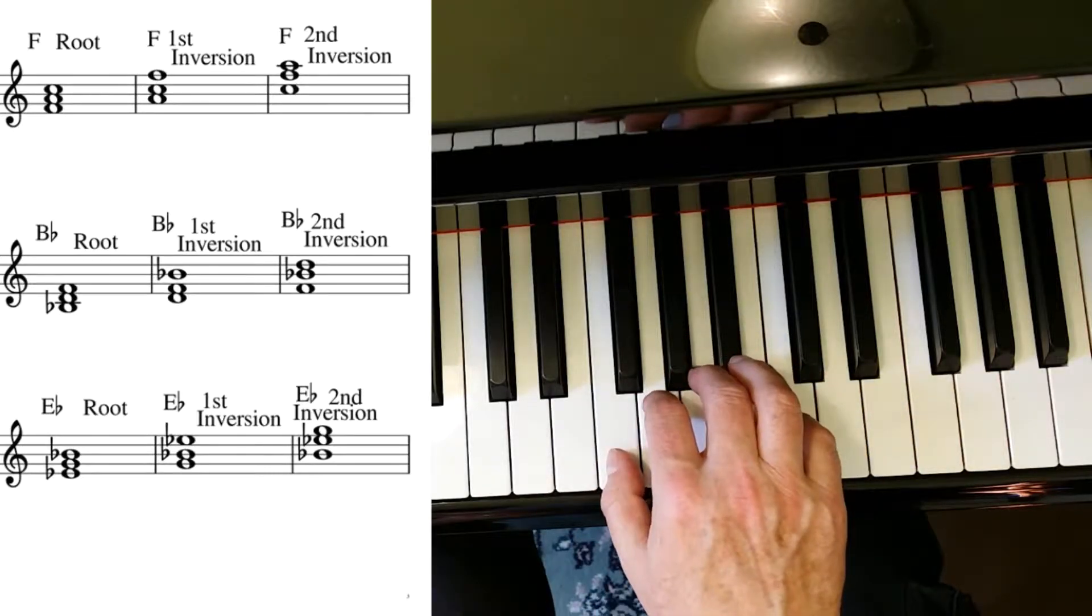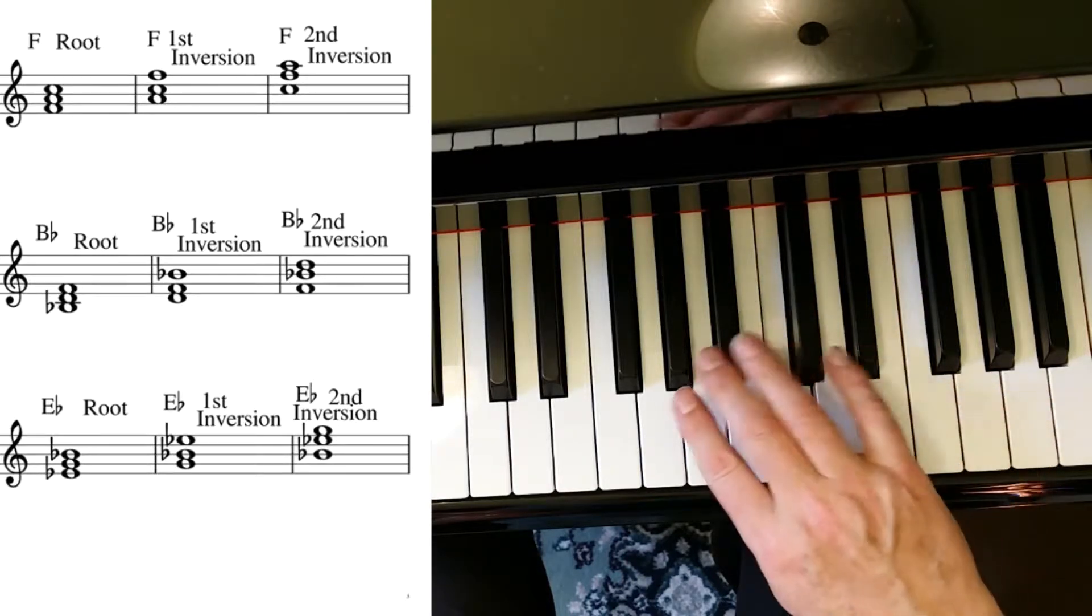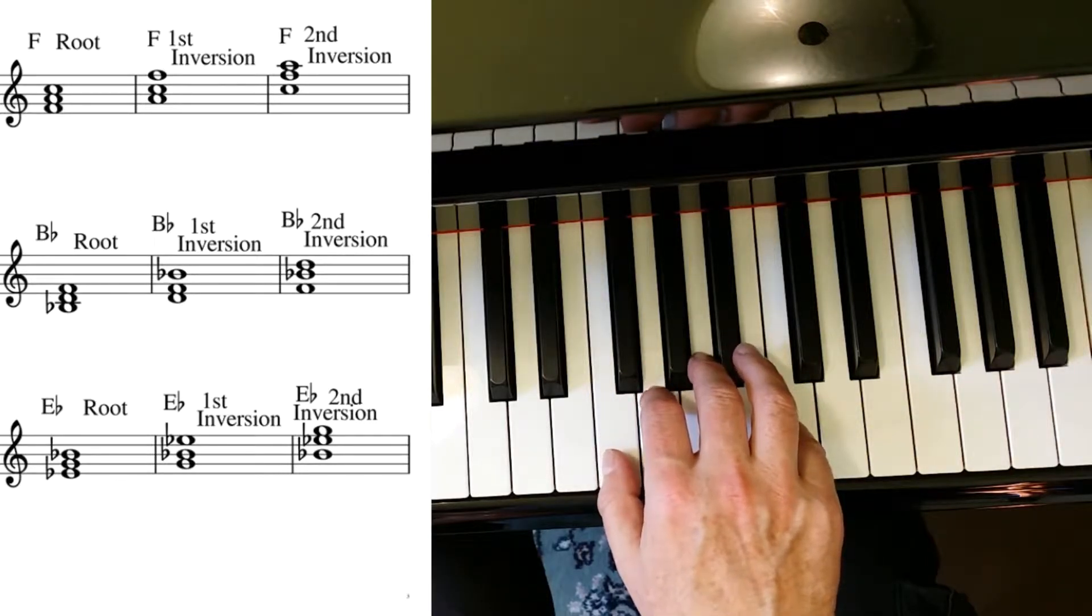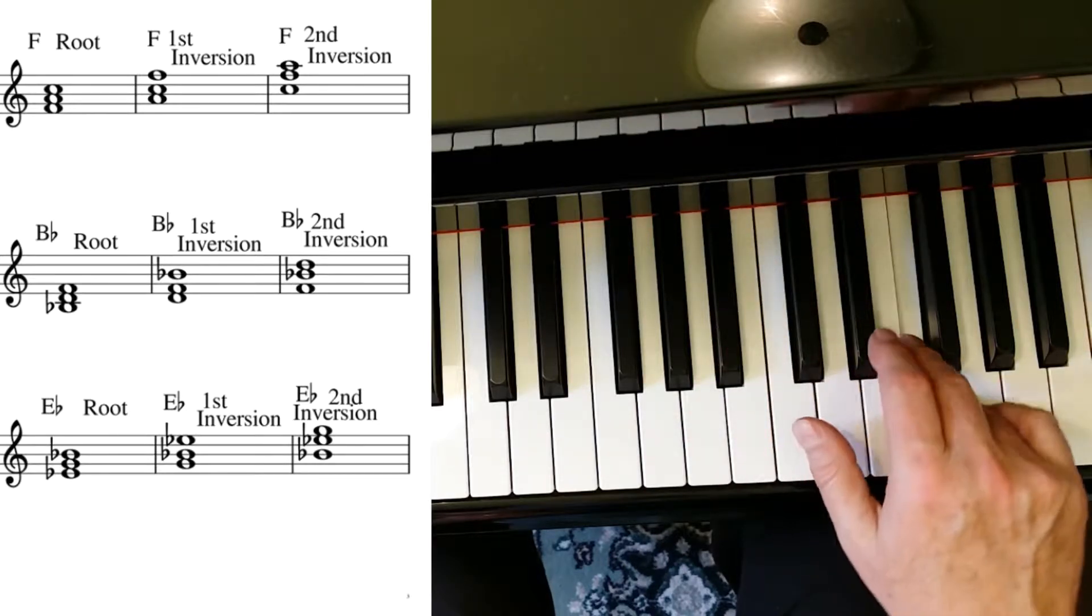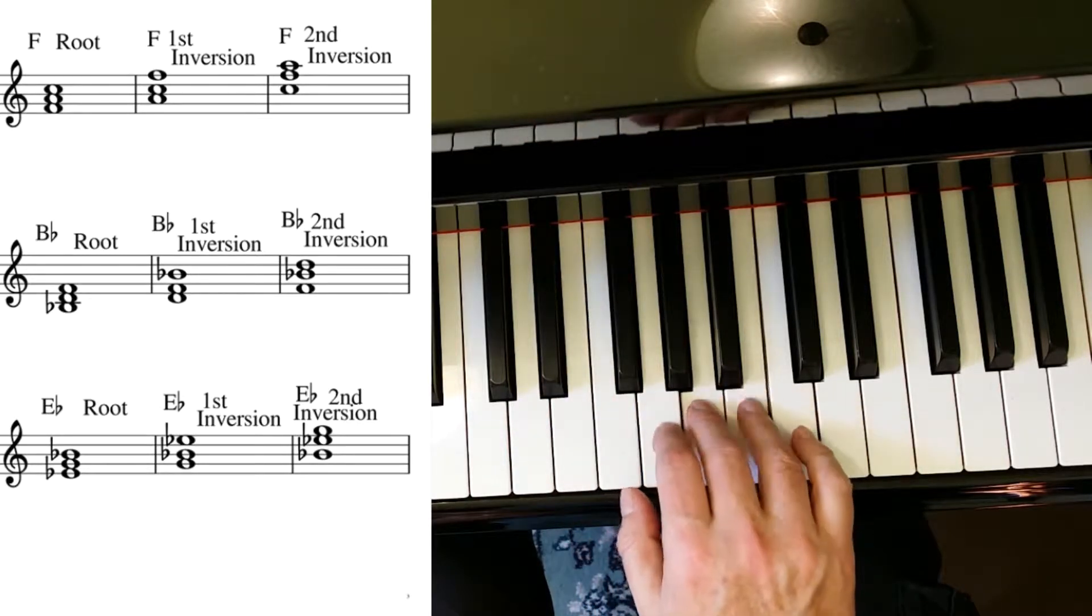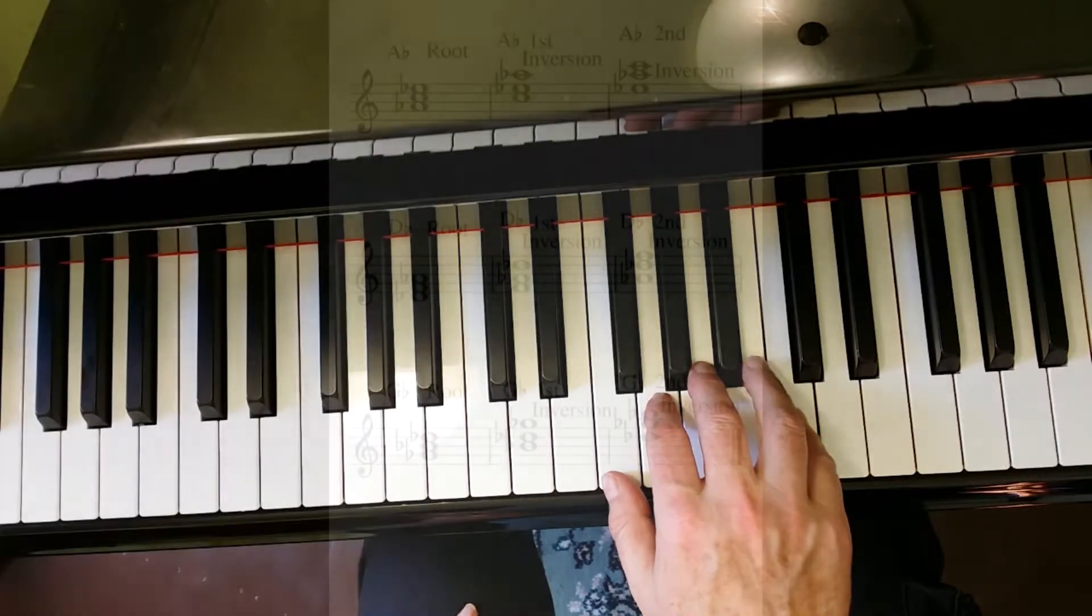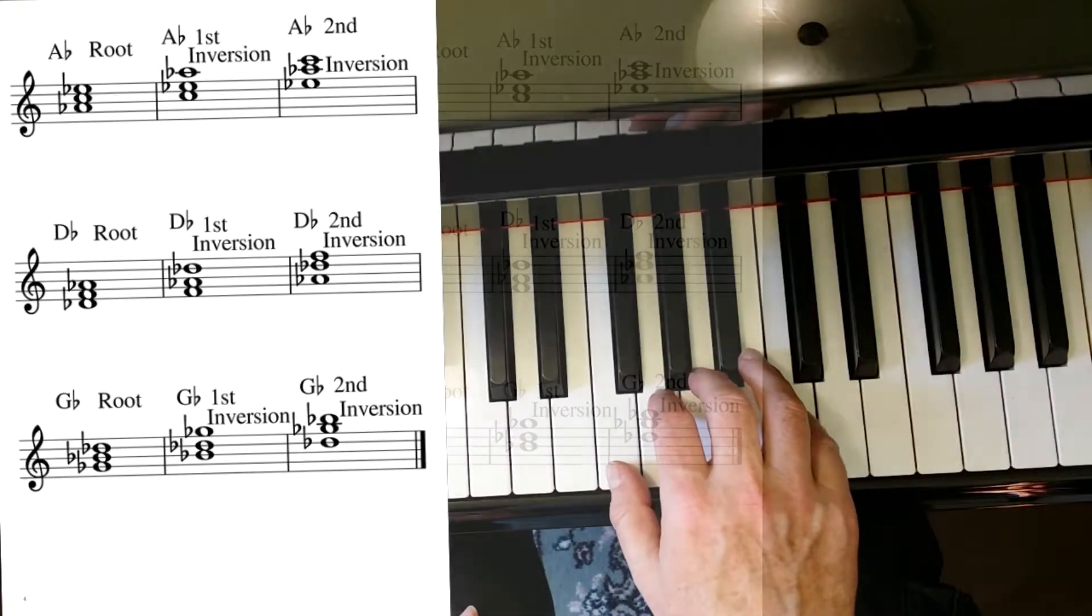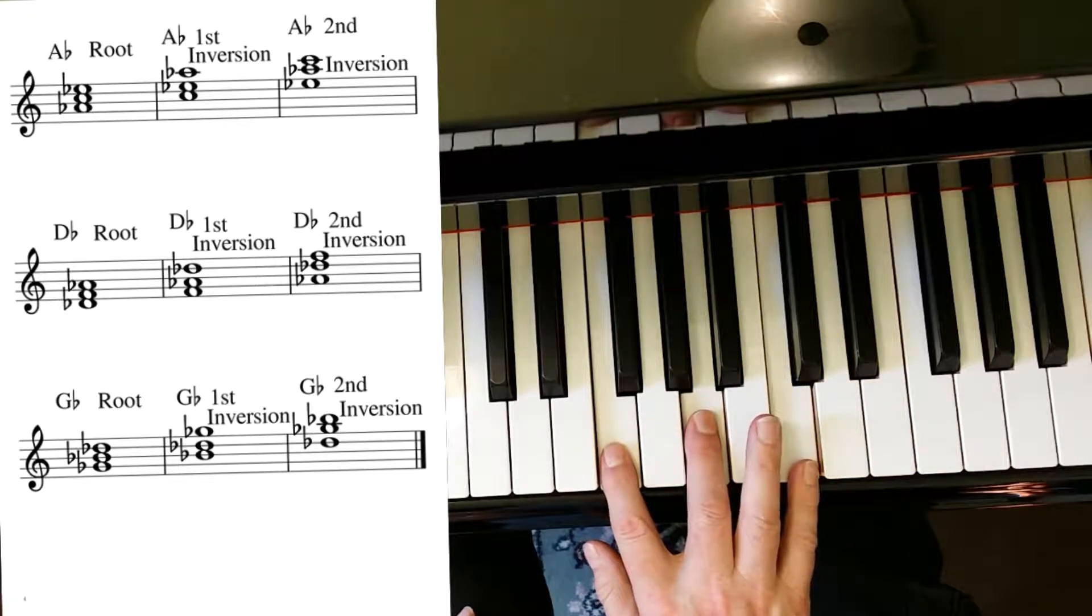We are numbering the degrees of the scale. We number the degrees of our major scale: one, two, three, four, five, six, seven, eight. Any major scale. All you've got to do is take the one, three, and the five, and you have the major triad.